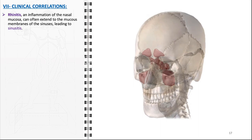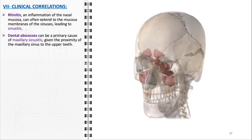Rhinitis, characterized by inflammation of the nasal mucosa, is a common condition that can often extend to the mucous membranes of the sinuses, leading to sinusitis. Sinusitis, whether acute or chronic, significantly impacts an individual's quality of life, causing symptoms like nasal congestion, facial pain, and reduced sense of smell. Dental abscesses represent a primary cause of maxillary sinusitis, primarily due to the proximity of the maxillary sinus to the upper teeth. Infections from the roots of the upper teeth can easily spread to the maxillary sinus, highlighting the importance of dental health in the prevention and management of sinus-related diseases.